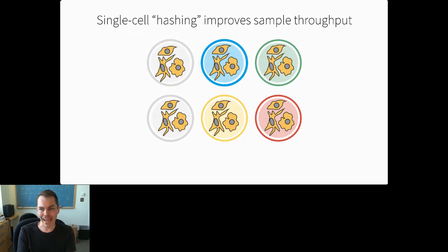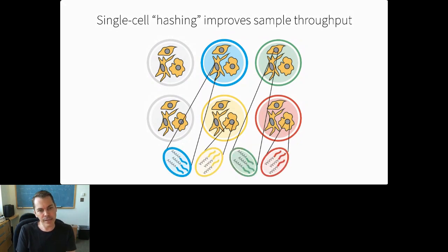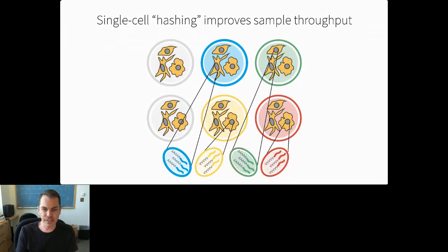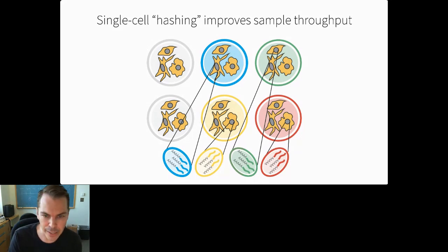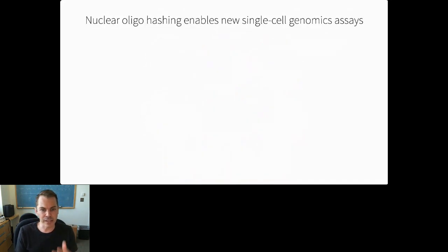Several groups have introduced hashing techniques where you label cells from each sample with a barcoded DNA oligo that ends up in each cell's library, telling you what sample it came from. We realized that because our SciRNA-seq technique works with permeabilized fixed cells or nuclei, we don't need to modify the oligos at all. When we incubate short single-stranded DNA oligos with permeabilized cells, they stick non-specifically to nuclear proteins and get trapped in the nuclei. So we can label our cells with vanilla oligos you'd order from IDT for PCR—super stable and super cheap.